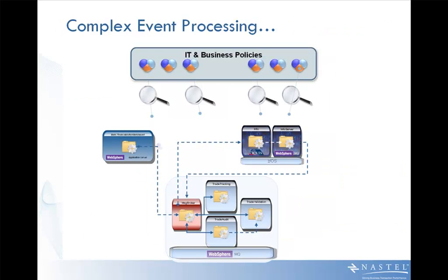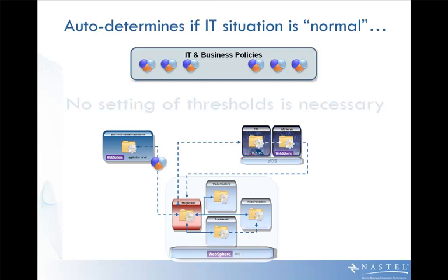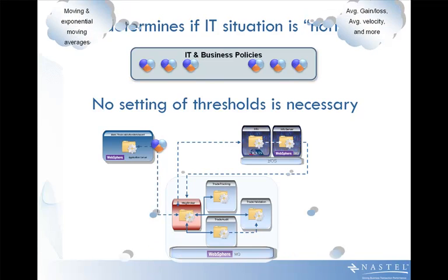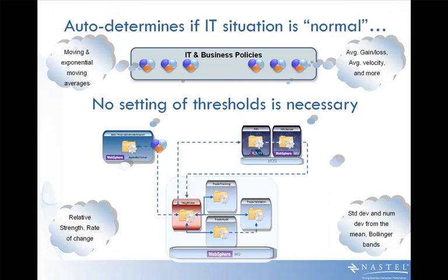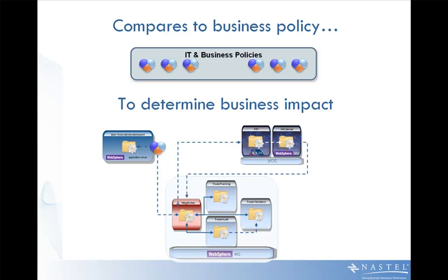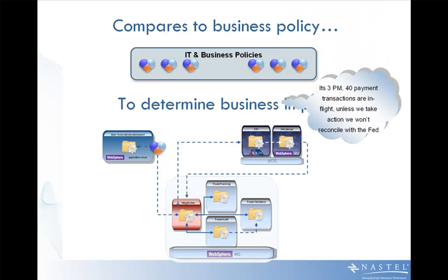We add in a complex event processing engine optimized for APM. We correlate events — both the kind we gather and third party — to determine if the IT situation is normal. And you never have to set a threshold; it's completely self-adjusting. This is compared to business policy to determine if, in fact, there is a business impact.